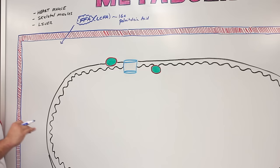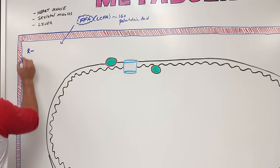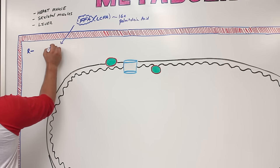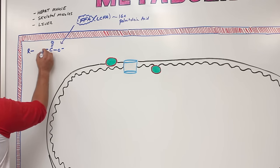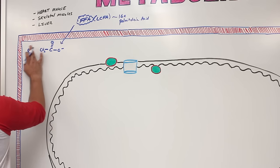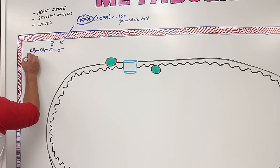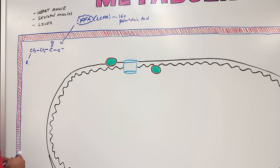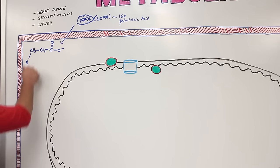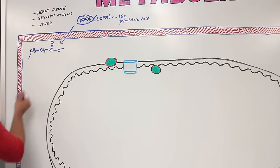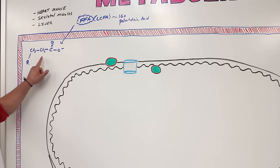I'm going to zoom in on some of those carbons rather than look at all 16. I'll put an R group, and then show the carboxyl carbon as carbon one, the alpha carbon next to it as carbon two, and the beta carbon as carbon three. The rest would be 13 carbons, shown as an R group.